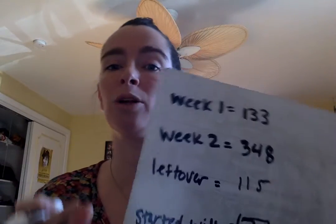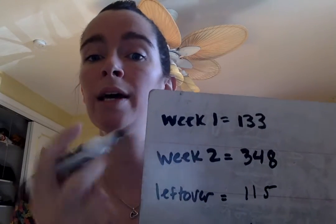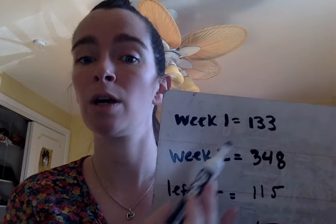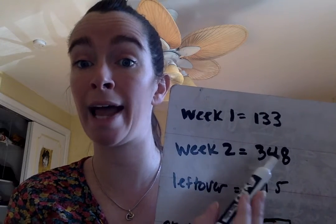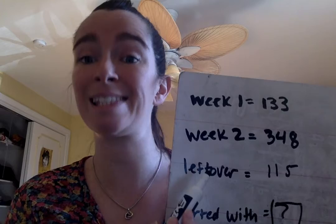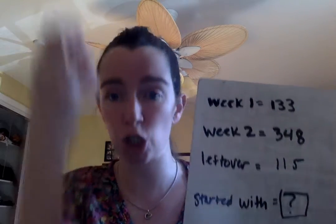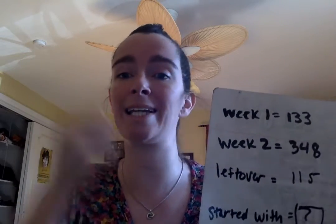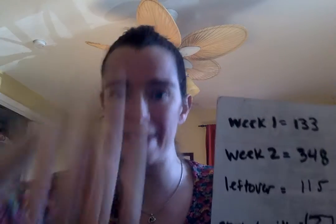I kind of just labeled it — I said week one. I knew in week one he gave out 133 eggs. Week two, the problem said he gave out 348 eggs. Leftover, he still has 115. I want to know how many he started with — before he handed any out, how many did he begin with?